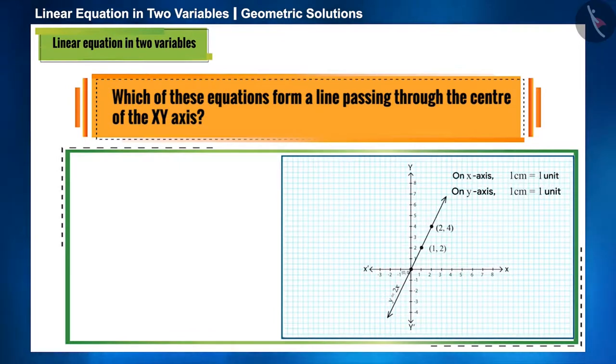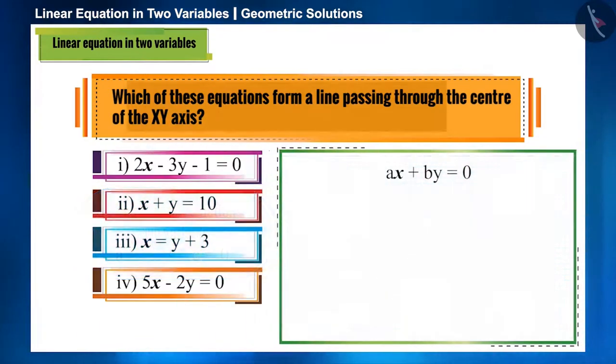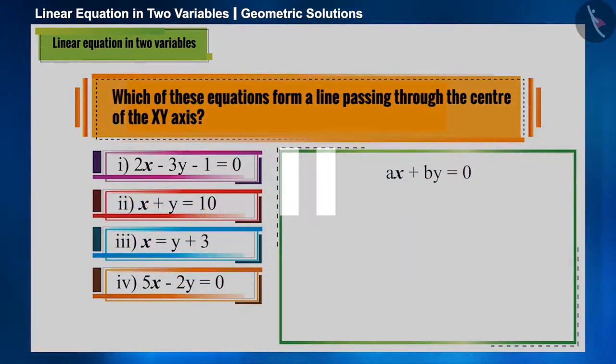As we discussed in our previous video, the line that passes through the center of the XY axis will be ax + by = 0. And if we compare it with the general form, c is zero here. You can pause the video and compare the given options with the equation and see which option is the correct answer to this question.